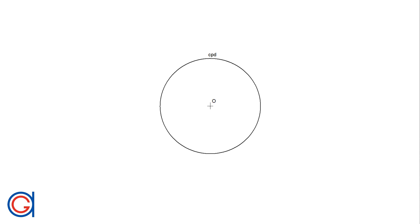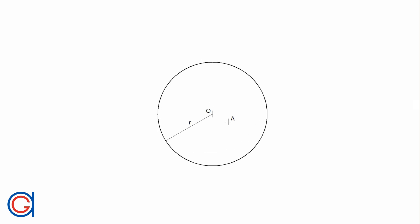Hello, today we are going to learn how to find the inverse element of any given circle, which can be another circle or sometimes a line, with respect to a reference circle. The inversion in a circle is a transformation which transforms one point A into its inverse point A prime, whose distances from the origin O equal the square of the radius of the circle, which defines the inversion and satisfies the equation R squared is equal to OA times OA prime.